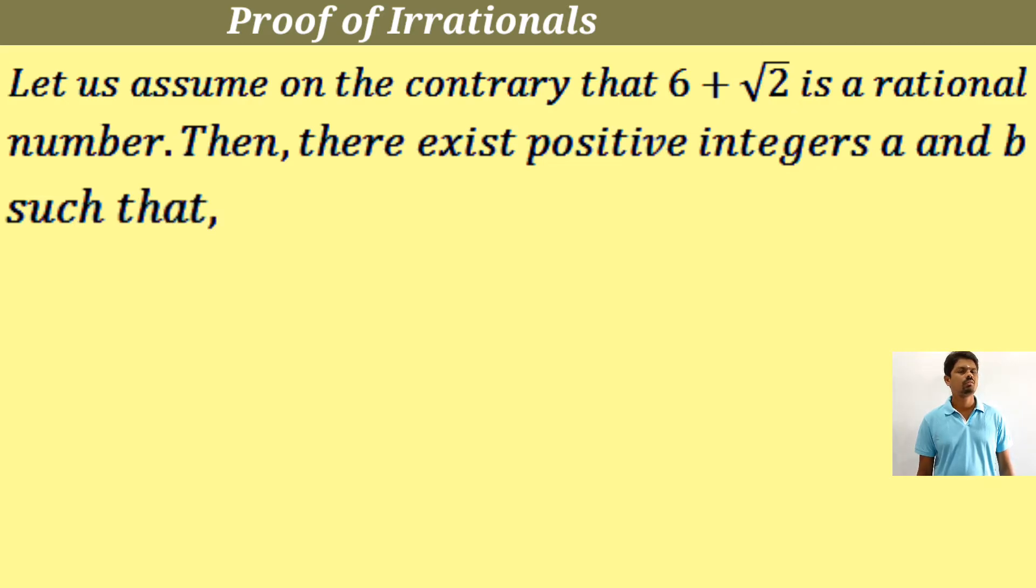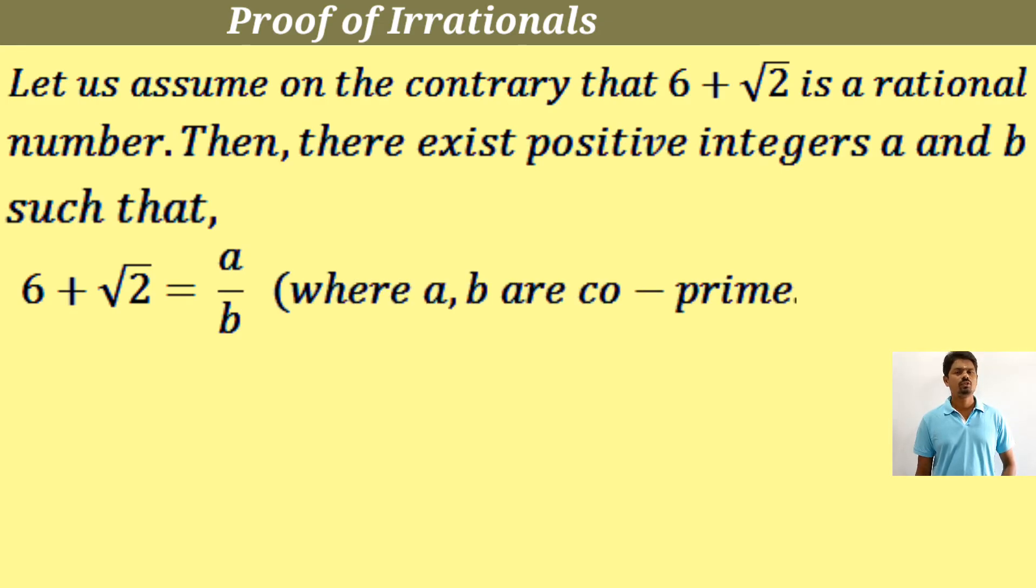Since 6 plus root 2 is rational, then it is of the form a by b. We can write 6 plus root 2 is equal to a by b. We have every rational number is of the form p by q. So 6 plus root 2 equals a by b, where a, b are co-primes and b is not equal to 0.